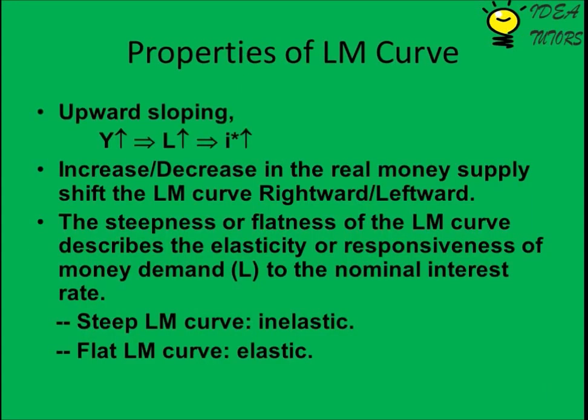Now let's look at some properties of the LM curve. It is upward sloping, as seen earlier — an increase in income leads to an increase in the interest rate. An increase or decrease in the real money supply shifts the LM curve rightward or leftward accordingly. The steepness or flatness of the LM curve describes the elasticity or responsiveness of money demand (L) to the nominal interest rate: a steep LM curve is inelastic, and a flat LM curve is elastic.